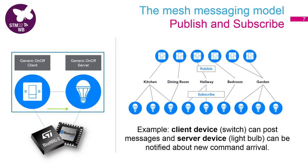Now let's consider that the BLE mesh is configured and the nodes are already provisioned. A node can send information to another using a unicast address — for example, a light switch controlling a specific light bulb. However, BLE mesh also implements a publish-subscribe protocol. We can define a set of lights, group them by a group address such as kitchen lights or dining room lights, and configure a light switch to publish messages to that group. This configuration can be changed easily during the lifetime of the product, making it very easy to add an additional light or light switch.